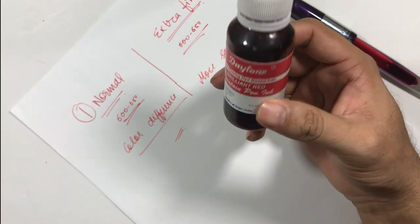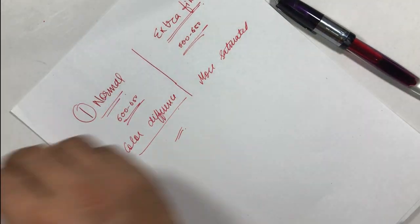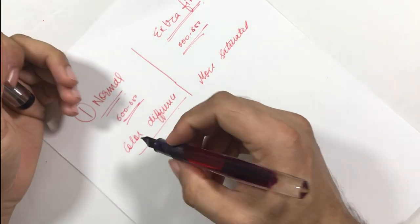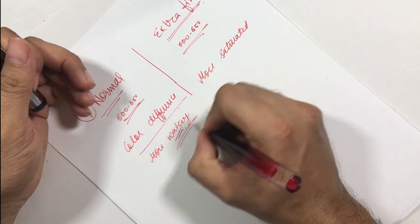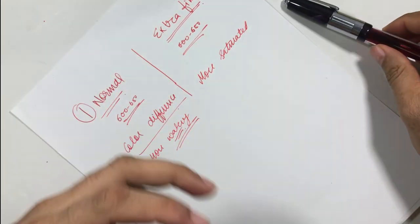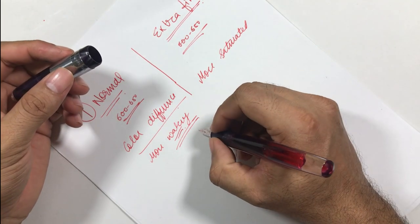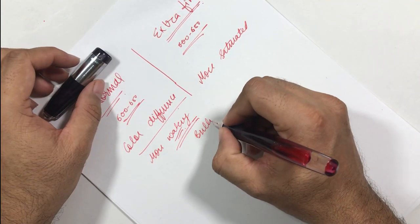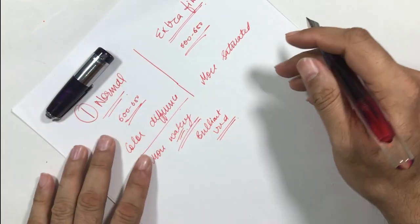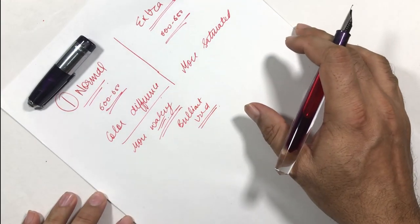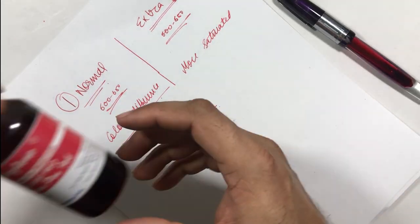These normal Dayton inks like red, blue black, are more watery inks, they are quite watery. They are good for pens that tend to run dry. Currently I am using this brilliant red in an airmail pen. You can see this ink is not very much saturated, the saturation is okay. The ink is feathering, so you will face some problems with these normal inks.